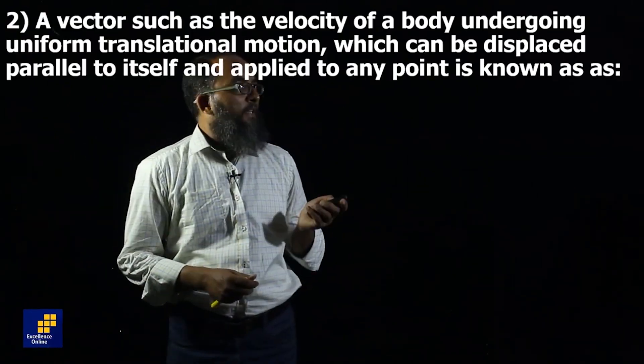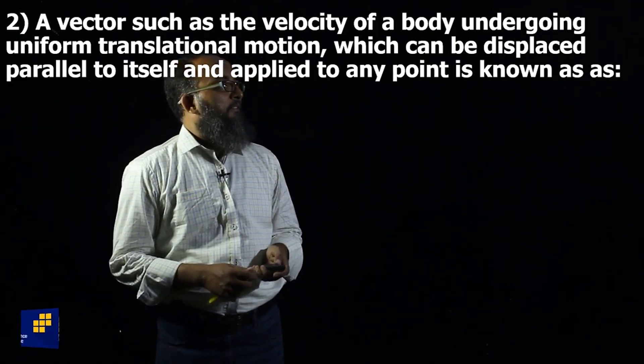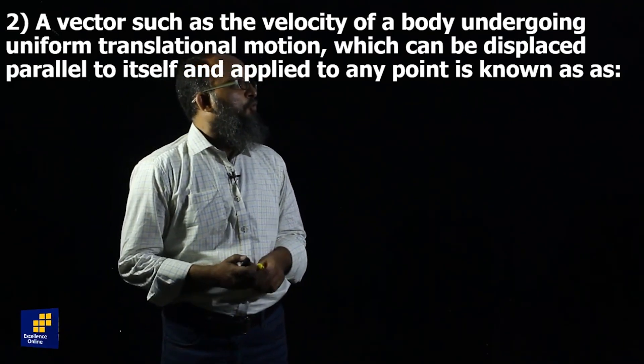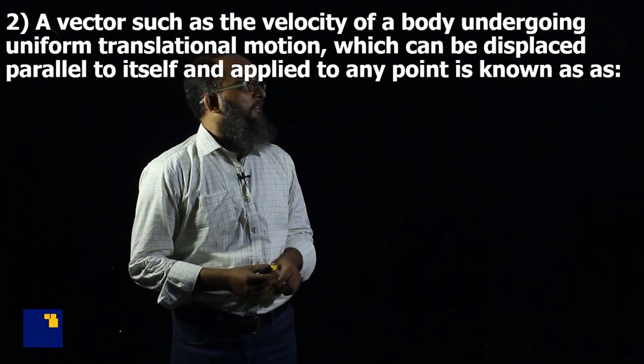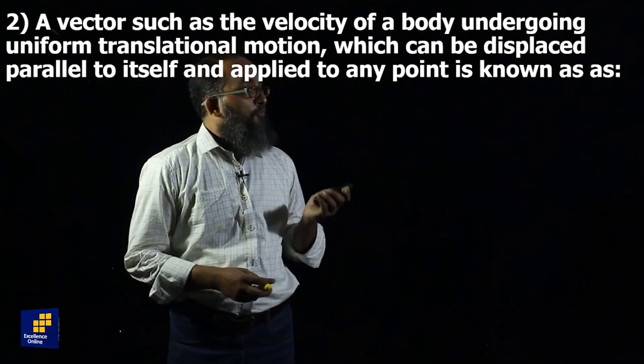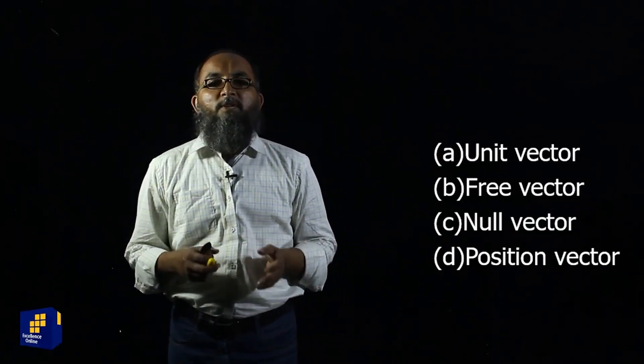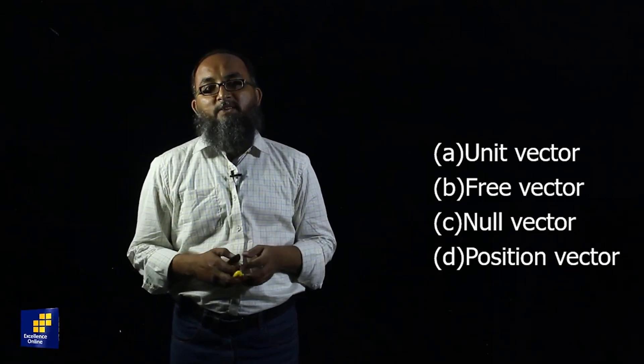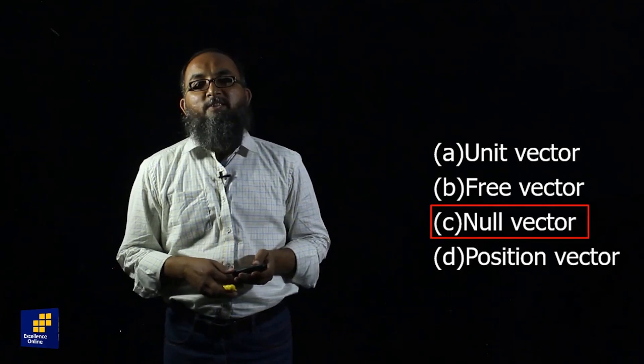The next question is here on the screen. A vector such as the velocity of a body undergoing uniform translational motion, which can be displaced parallel to itself and applied to any point is known as. Students, by definition, a vector that can be displaced parallel to itself is called free vector. So the correct option is B, free vector.